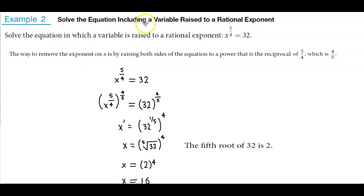Example 2. Solve the equation including a variable raised to a rational exponent. x to the 5 fourths equals 32.